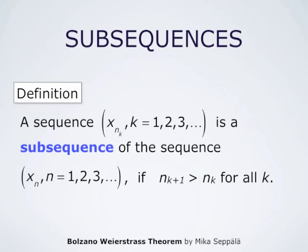We say that a sequence x_{n_k}, where k goes from 1, 2, 3 and so forth, is a subsequence of the sequence x_n if n_{k+1} is always larger than n_k for all k. So a subsequence of x_n simply chooses some elements of the sequence x_n without changing the order of these elements.